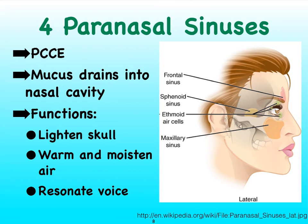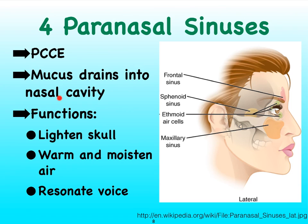The paranasal sinuses are also part of the respiratory system and there are a total of four. We have the frontal paranasal sinuses in the frontal bone of the skull, the sphenoid sinuses inside the sphenoid bone, the ethmoid sinuses inside the ethmoid bone near your eyeball, and finally a maxillary sinus in each one of our maxillary bones. These are cavities inside flat or irregularly shaped bones, all lined with pseudostratified ciliated columnar epithelial tissue. The mucus generated by this tissue in the paranasal sinuses drains into our nasal cavity.